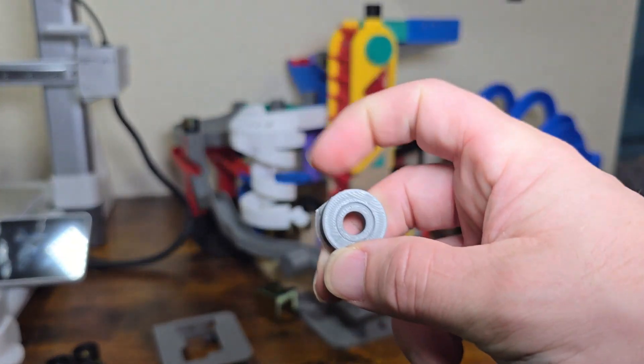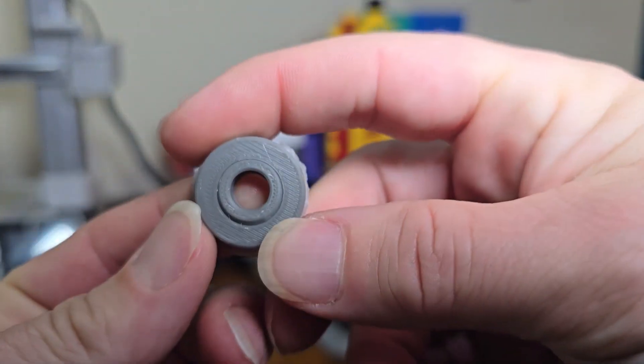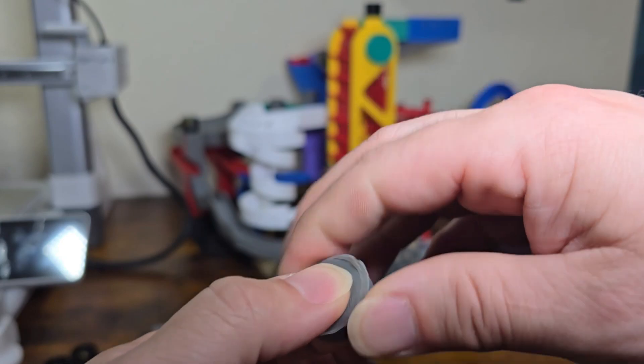To continue the assembly process, it said I needed a bearing, so I decided to print one. I need to clean it up a little bit, but it spins just fine.